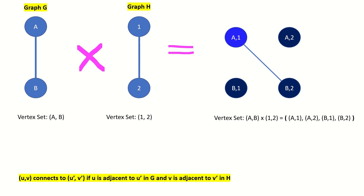Notice that a1 could not connect to any vertex with left entry a, and could not connect to any vertex with right entry 1. For vertex a2, we're looking for a vertex whose left entry is adjacent to vertex a in graph G, and whose right entry is adjacent to vertex 2 in graph H. Only vertex b1 meets these conditions, so we connect them. Vertices with the same letter or the same number don't connect. We connect vertices only if their left entries are adjacent in the first graph and their right entries are adjacent in the second graph. According to these rules, we are finished, as b1 can only connect to a2 and b2 can only connect to a1, both of which we already connected.